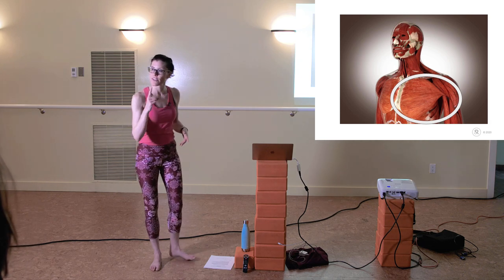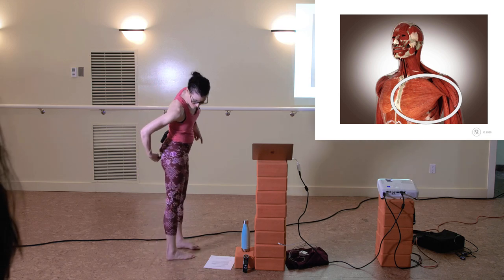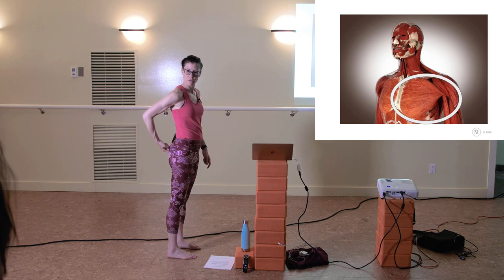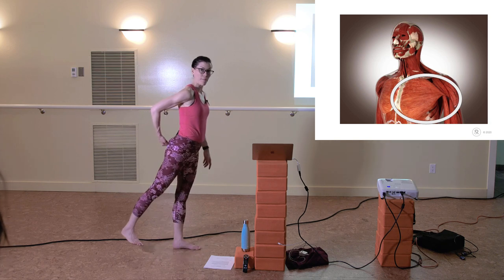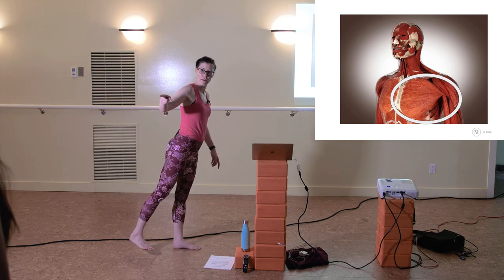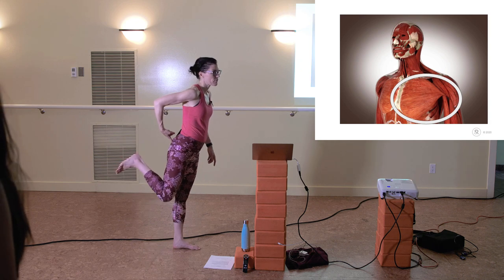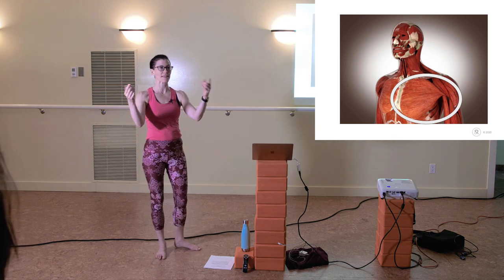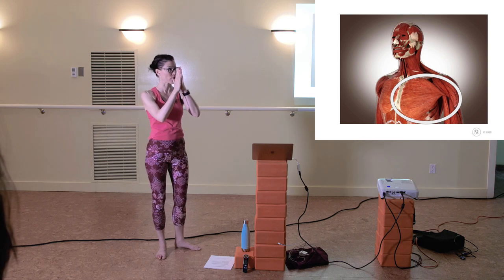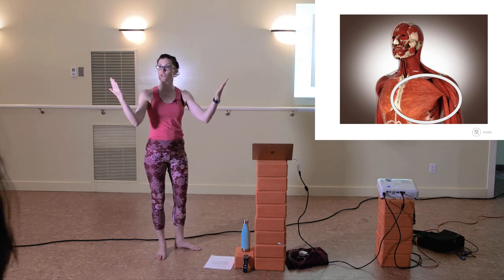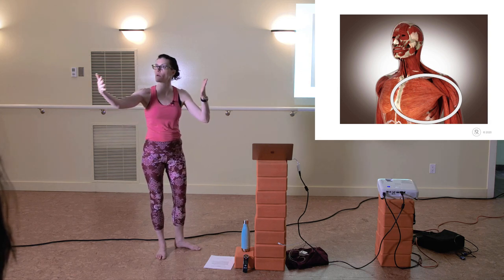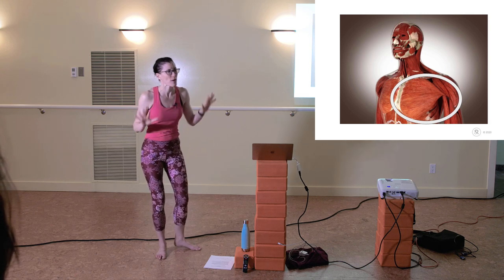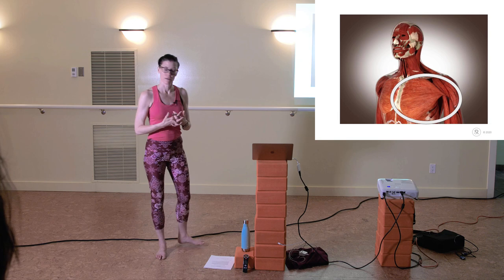The hamstring starts at the sitting bone and goes down the backs of the legs — it can take your leg back and also bend your knee. When you see a muscle crossing a joint, you ask: what is the action if those two bones pull closer together? If it crosses two joints, ask the same question at each joint.